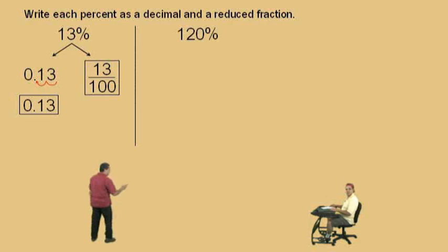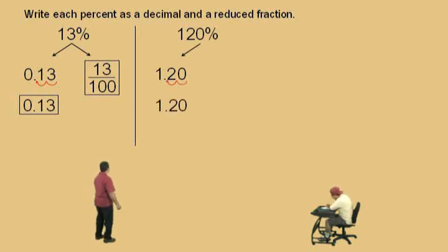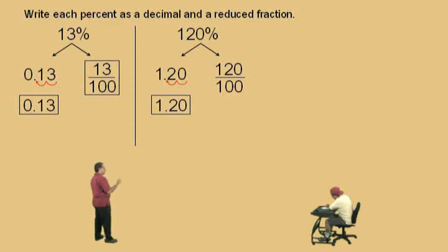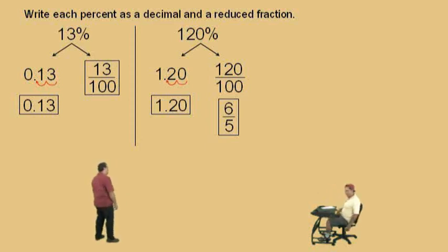Let's do another one. Now don't get scared. 120%, Charlie — change it to a decimal. We move the decimal which way? That's right, and so we end up with 1.20. Very nice there, Charlie. Now to write it as a fraction — what do we do, Charlie? Over 100. That's right, and so we have 120 over 100. Now you have your calculator, so divide top and the bottom by 20 and you should end up at 6 over 5. You can first divide by 10, and then again divide by 2, and you should end up with 6 over 5.